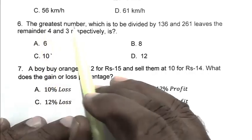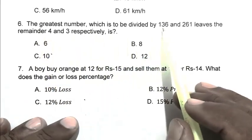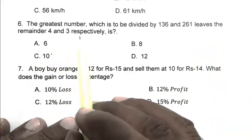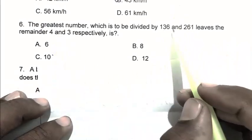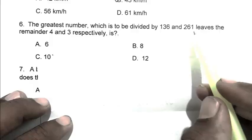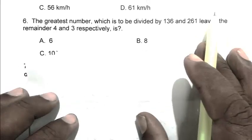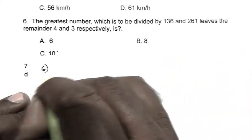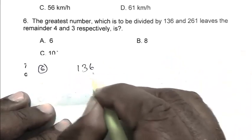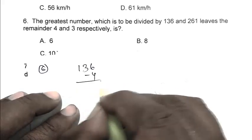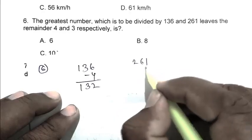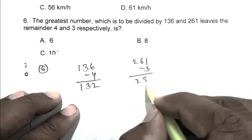Question number six: The greatest number which is to be divided by 136 and 261 leaves remainder 4 and 3 respectively. First we subtract 4 from 136 and 3 from 261. 136 minus 4 gives 132, and 261 minus 3 gives 258.